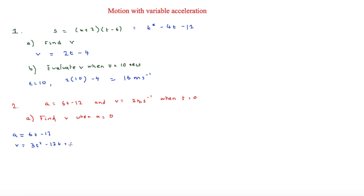To find c, we substitute t = 0 and v = 2. That gives 2 = 0 − 0 + c, so c = 2. Therefore v = 3t² − 12t + 2.